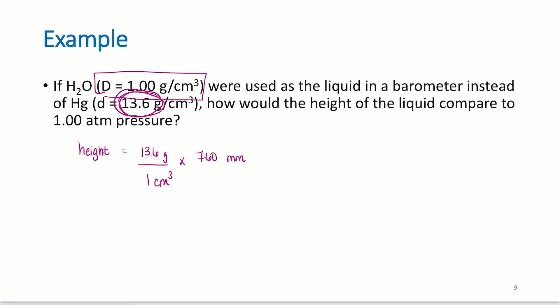This would give me 10,336 millimeters. So I'm not so worried about the units right here. That's what I'm trying to do. I'm trying to take this 13.6 and see how much higher it would have to go to account for the water. In millimeters, this would be 10,336 millimeters, which would be 10.34 meters. Basically, if water were used, the barometer would have to be 10.34 meters compared to using mercury.